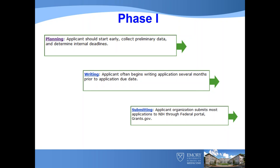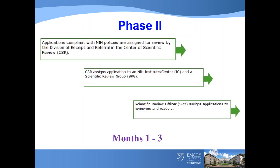To review the timeline: the NIH is probably the longest process. Private foundation societies tend to take less time. Phase one is common to any granting agency — this is your planning, writing, and submitting. What happens after you submit is sometimes a bit of a mystery for some people.